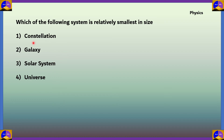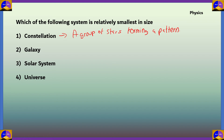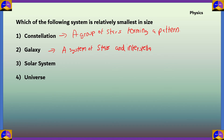Let's look at the definition of each of these options and find which is the smallest. A constellation is a group of stars forming a pattern in the night sky — we humans relate them to everyday objects. A galaxy is a system of stars and interstellar matter, consisting of billions of stars and other outer space matter.